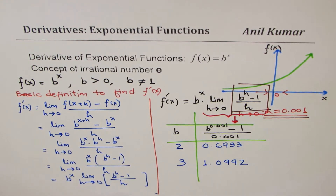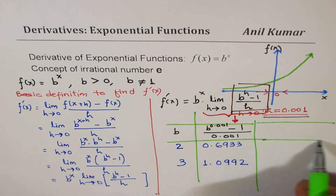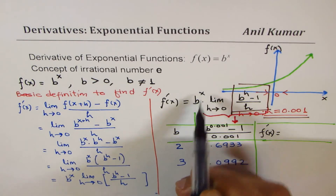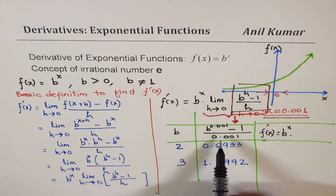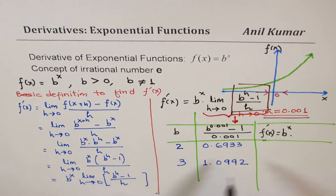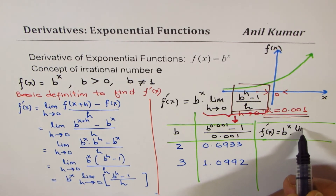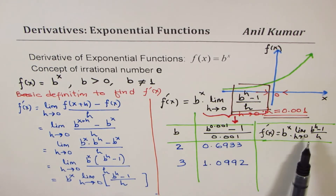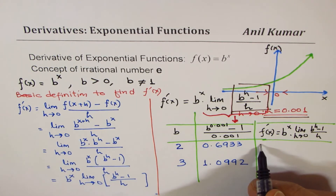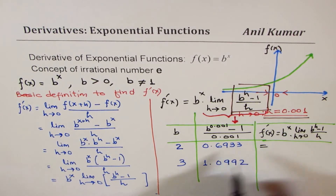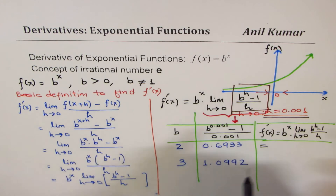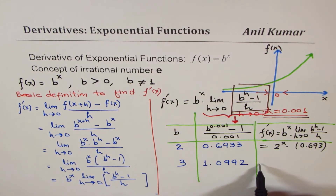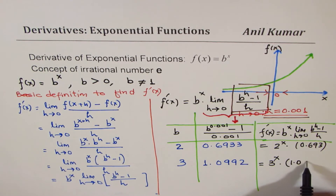For exponential functions the derivative equals the function itself, b to the power of x, times this limiting factor. We just calculated this factor as approximately 0.6933 for b equals 2, so the derivative of 2 to the power of x is 2 to the power of x times 0.693. For b equals 3, the derivative is 3 to the power of x times 1.0992.